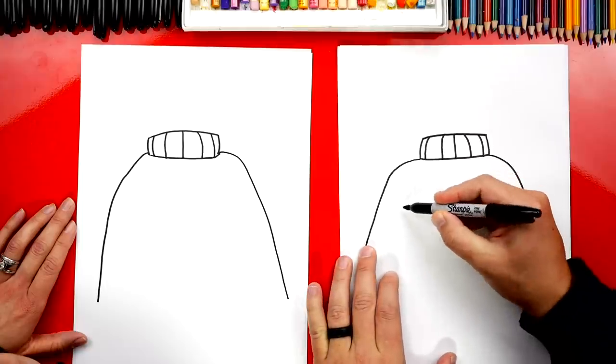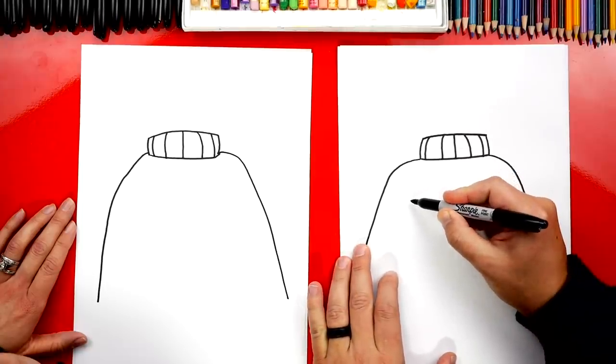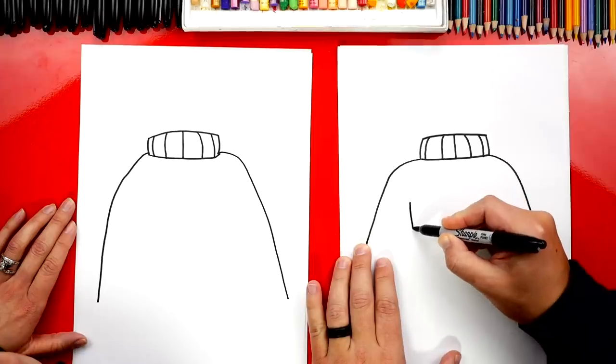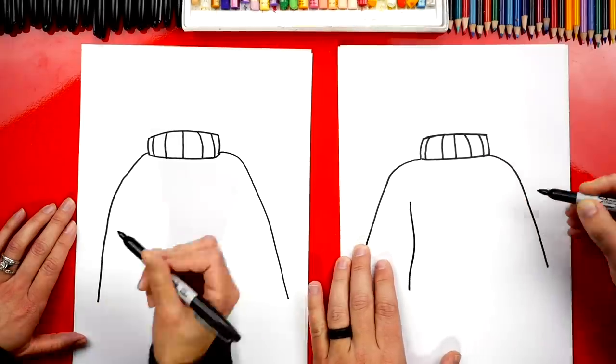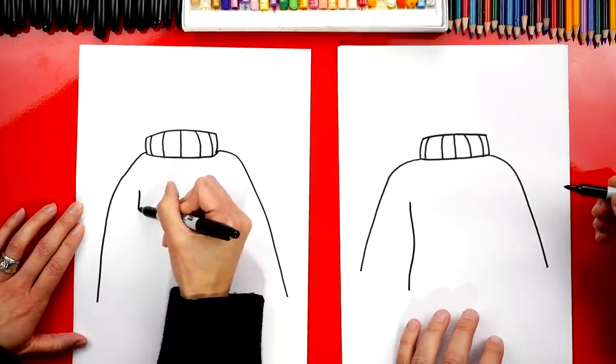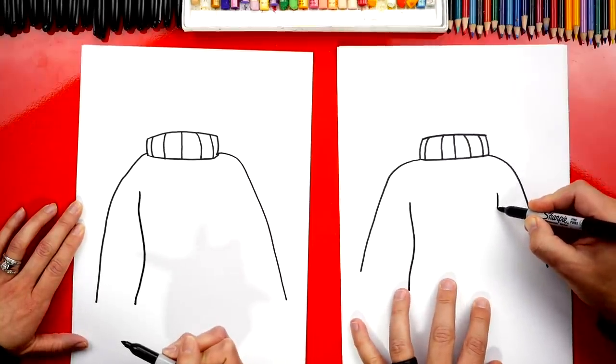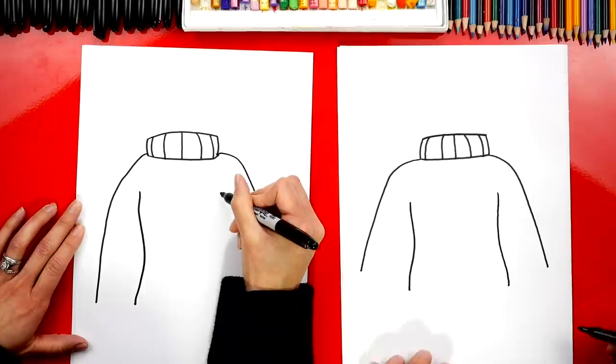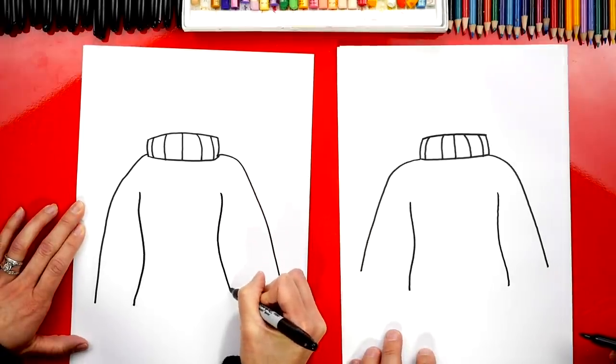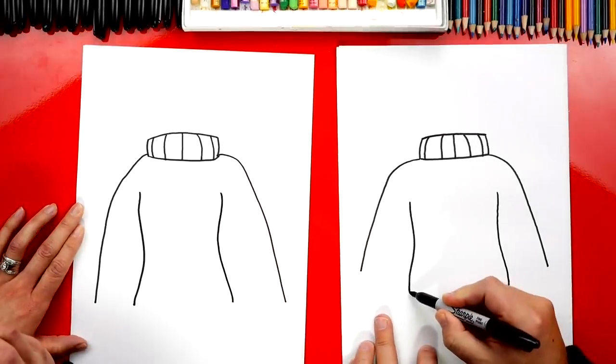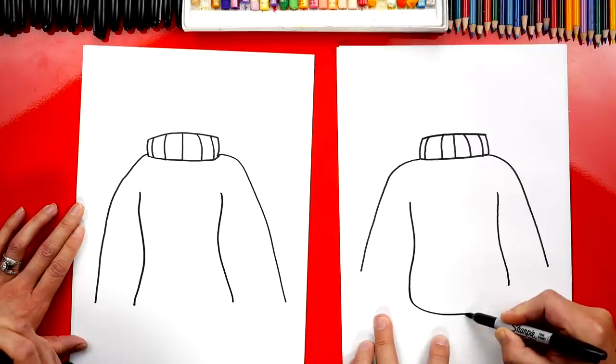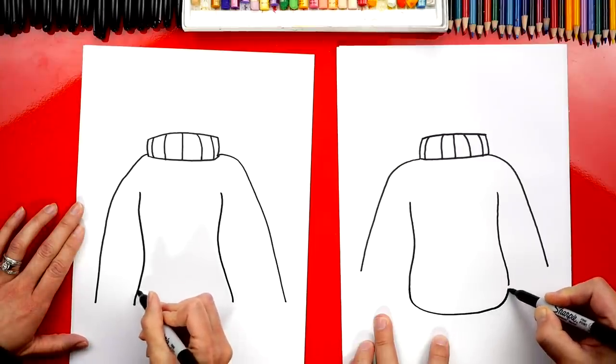Now we're gonna come back and finish the sleeves later. Let's draw the body part of the sweater. So we're gonna start where the armpit is and we're gonna draw a curve that comes in and then back out. And then do the same thing on the other side. Come in, back out. Then we're gonna connect the bottom of those two lines with a curve and connect to the other side.